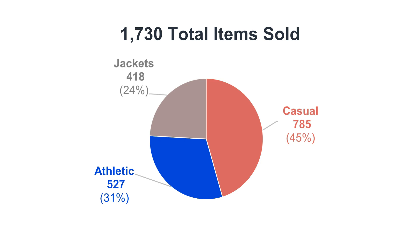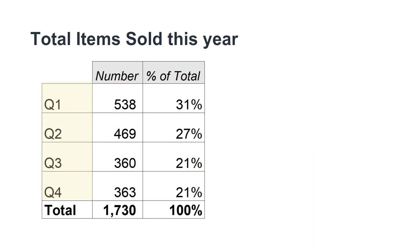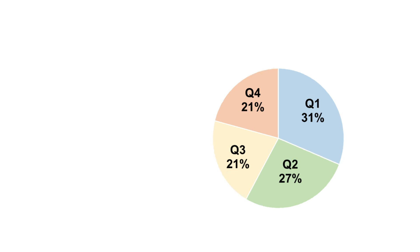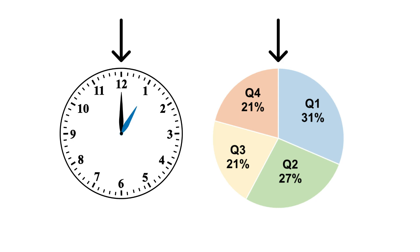You can add data labels to a pie chart either directly on the chart or as data labels off to the side. The data for a pie chart can be shown for categorical data — as shown here with our three categories: casual clothing, athletic clothing, and jackets. And it can be used to report ordinal data, such as quarter one, quarter two, quarter three, and quarter four. When it comes to designing a pie chart, it's helpful to understand how people usually read a chart. They usually begin at the top of the chart, which is called the 12 o'clock position, and they continue to read around the pie chart in a clockwise order.